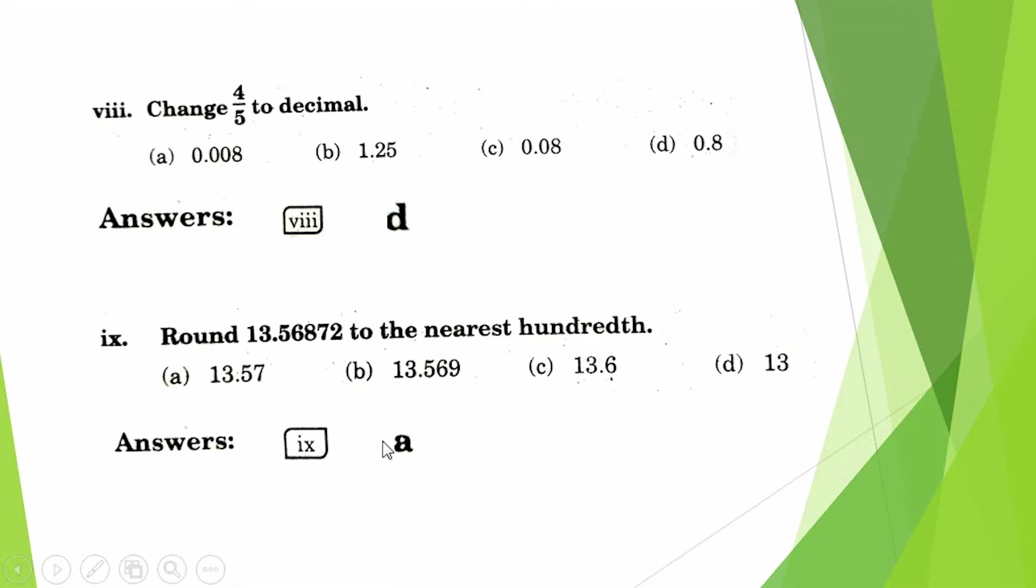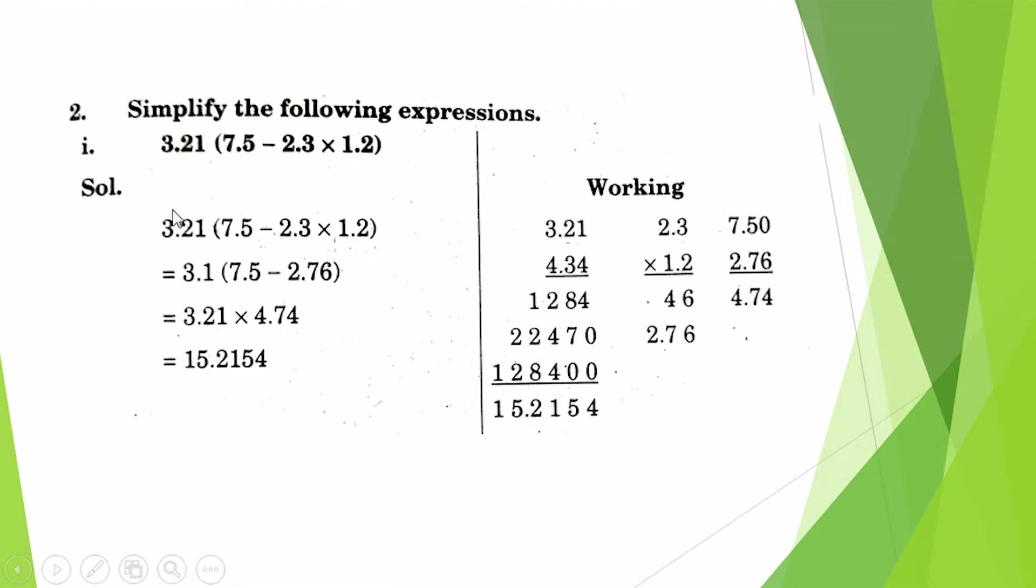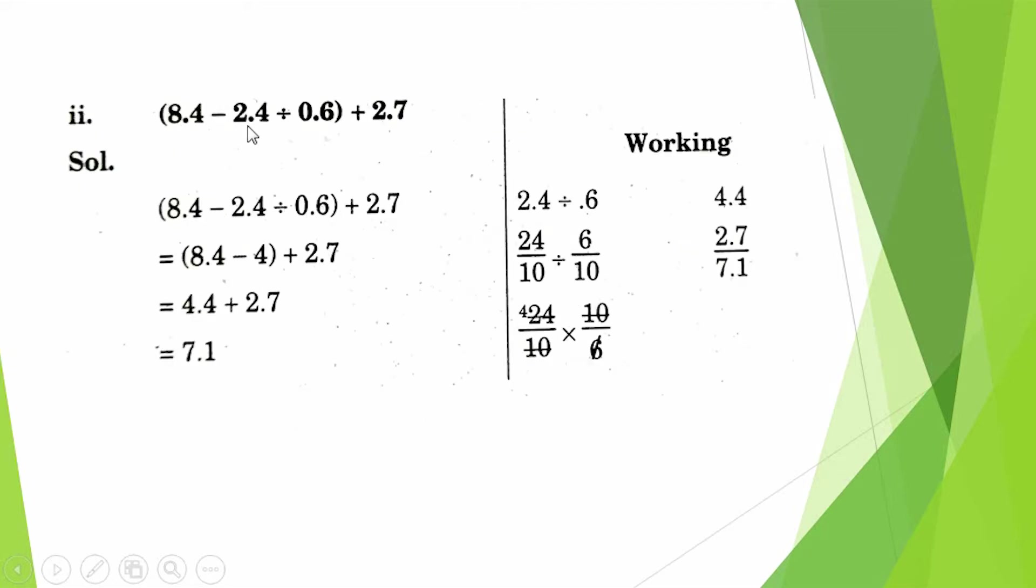Question number 2: Simplify the following expression. 3.21 times (7.5 minus 2.3 × 1.2). First of all we multiply these two values. Answer will be 2.76. When we minus 2.76 from 7.5, answer becomes 4.74. When we multiply 3.21 × 4.74, the answer is 15.2154.